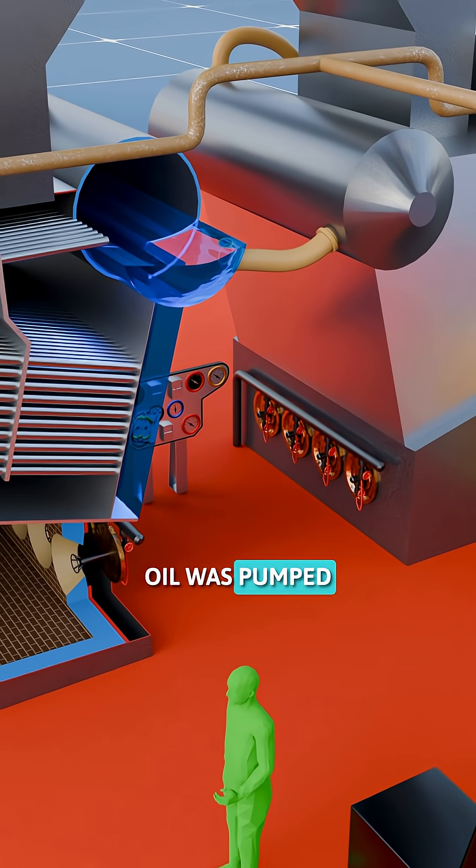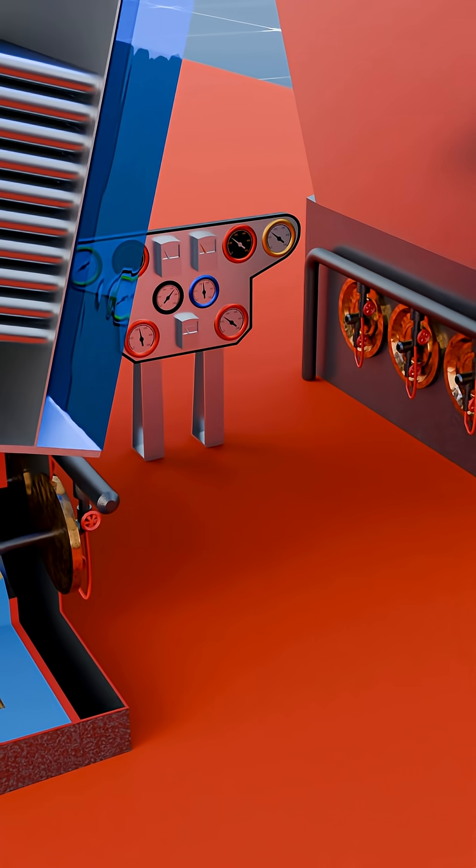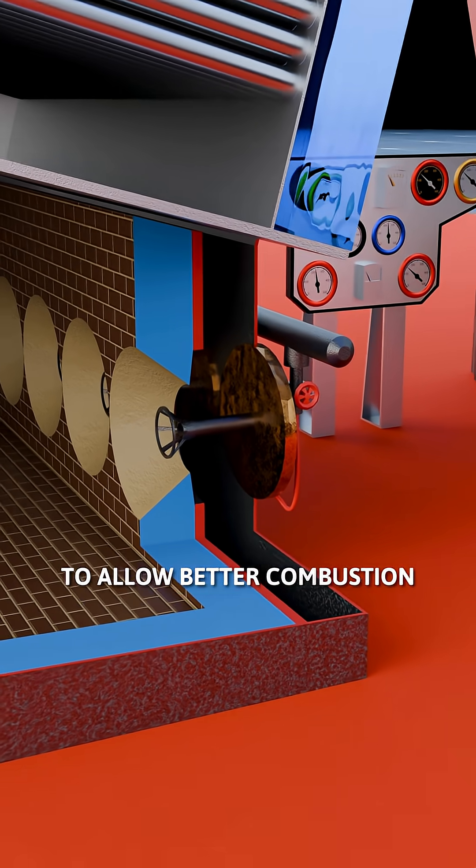Pressurized heated fuel oil was pumped through fuel lines to four burners on each boiler. At the tip of each burner, the oil was atomized into fine mist to allow better combustion.